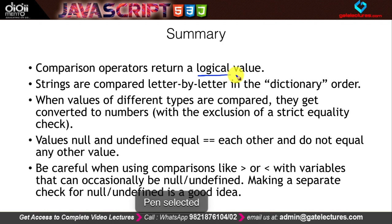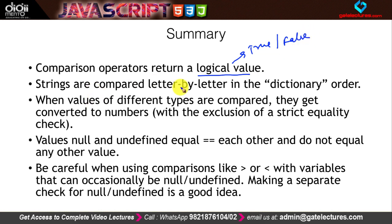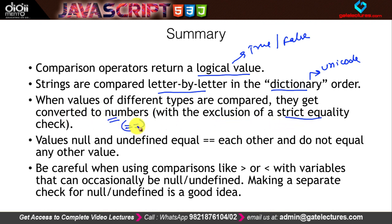Here is a summary of all operations. Comparison operators return a boolean value — either true or false. Strings are compared letter by letter in dictionary order using Unicode values. When values of different types are compared, they are converted to numbers, with the exclusion of strict equality. The values null and undefined equal each other under ==, but do not equal anything else — this is a special case.